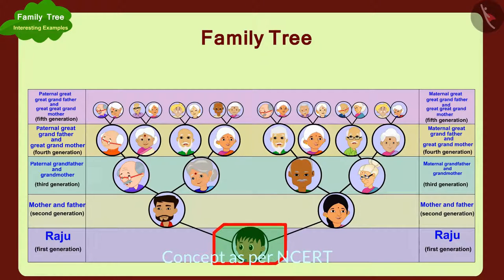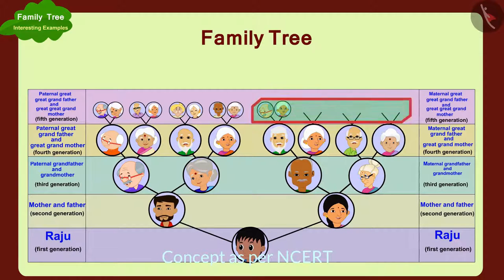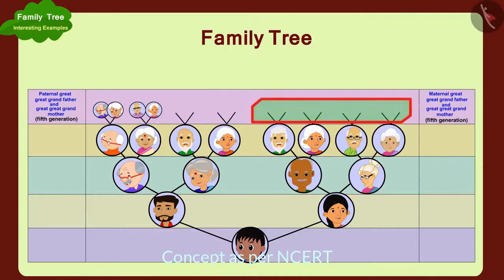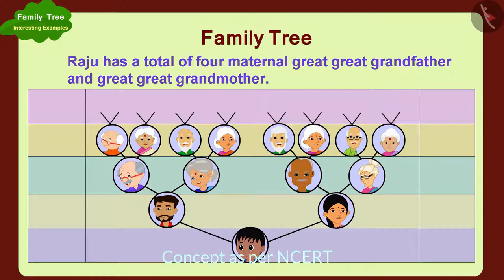Raju's maternal great-great-grandfather and great-great-grandmother will be his mother's great-grandfather and great-grandmother. In this way, these are Raju's maternal great-great-grandfather and great-great-grandmother. Raju has a total of four maternal great-great-grandfathers and great-great-grandmothers.